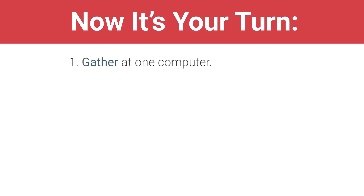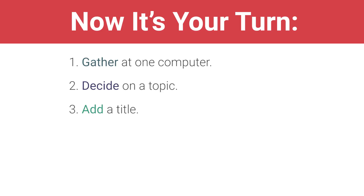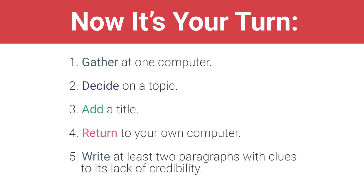Now it's your turn. Talk to your partner and decide on a topic for your fake article. Add a title to your document. Return to your own computer to collaborate digitally with your partner. Write an article that is at least two paragraphs long and gives readers at least three clues that the article is not credible.